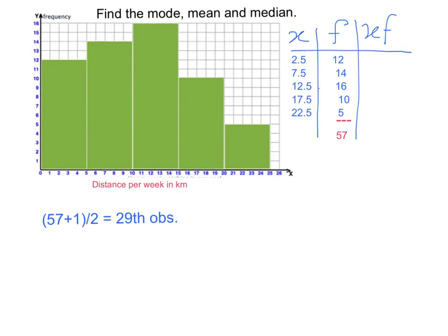Now we consider the median. If we look at the first two frequencies, then this adds up to 26. But our median happens at the 29th observation. That is, 57 plus 1 divided by 2 is at the 29th observation. Considering these first two groups, we have 26. The 29th observation must happen somewhere here, in the third bar.